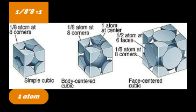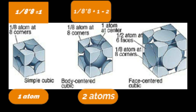Now see the second diagram: the body-centered cubic arrangement. Atoms are at the corners — their share is 1/8, and there are 8 such atoms, so 1/8 × 8 = 1 complete atom from the corners. Additionally, 1 atom is at the center of the cube, and that atom has no share with any other cube — it belongs completely to 1 cube. So its contribution is 1. Therefore, 1 + 1 = 2 atoms belong to 1 unit cell in a body-centered cubic arrangement.